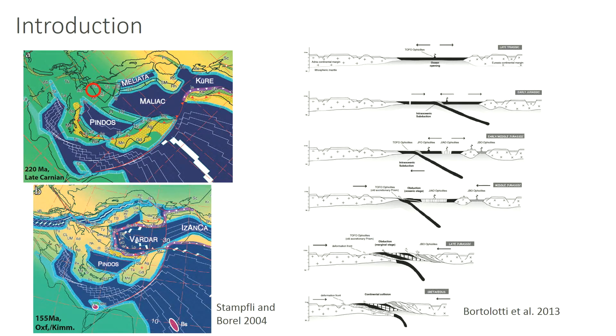Intra-oceanic subduction started in the Middle Jurassic and lasted until possibly the late Jurassic and earliest Cretaceous, with the creation of Ophiolitic crust, and then final Ophiolitic emplacement started somewhere in late Jurassic and early Cretaceous with the closure of the ocean happening in the early Cretaceous. However, I repeat, this is only one of the possible explanations.